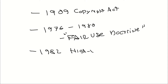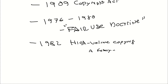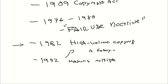In 1982, high-volume copying became a felony, increasing the punishment for copyright infringement. Then around 1992, making multiple copies for commercial advantage and private gain also became a felony. Not just some guy trying to sell pirated movies, but about potentially just for your own benefit.